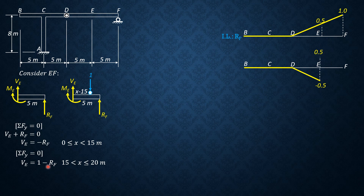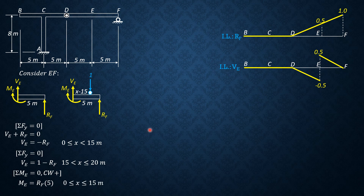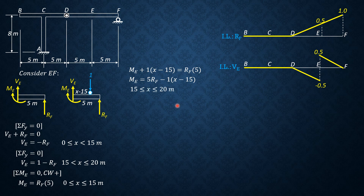That's the influence line for shear at E. For moment at E, from 0 to 15 meters: taking summation of moments about E equals zero (clockwise positive), ME = RF times 5, for 0 ≤ x ≤ 15 m. When x is between 15 and 20 m, the unit load is on this segment, so ME + 1(x − 15) = RF times 5, giving ME = 5·RF − (x − 15), for 15 ≤ x ≤ 20 m.